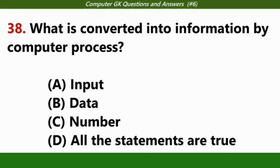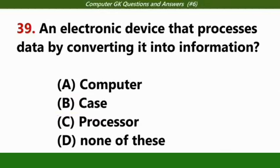What is converted into information by computer process? Answer B, data. An electronic device that processes data by converting into information? Answer C, processor.